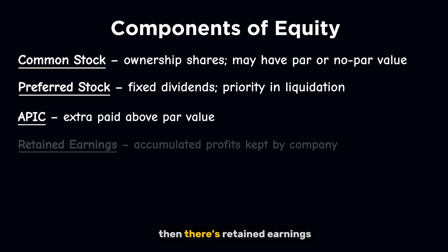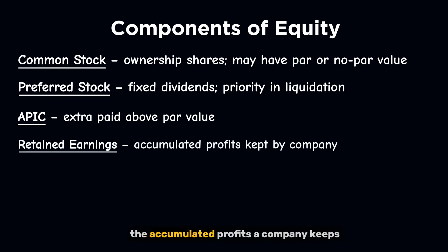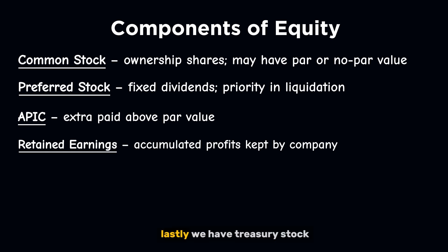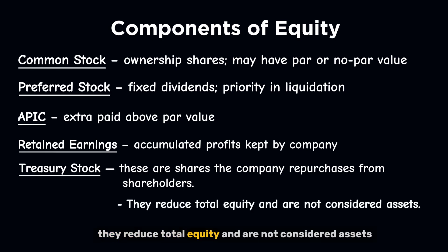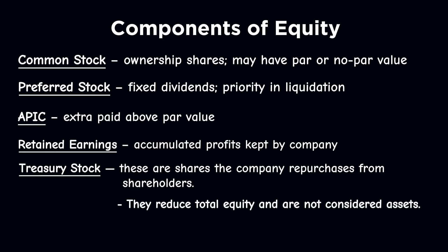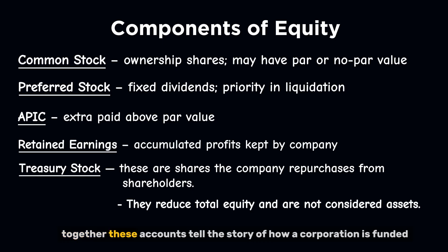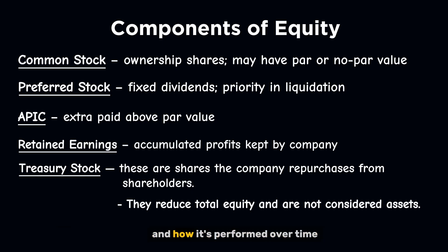Then there's retained earnings — the accumulated profits a company keeps instead of paying out as dividends. Lastly, we have treasury stock: shares the company repurchases from shareholders. They reduce total equity and are not considered assets. Together, these accounts tell the story of how a corporation is funded and how it's performed over time.